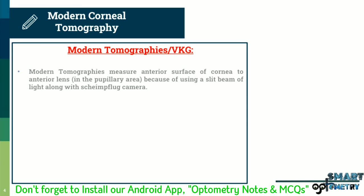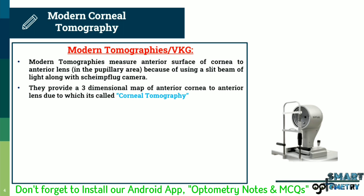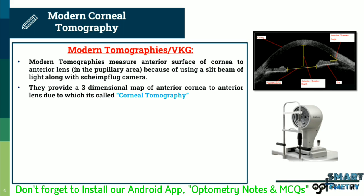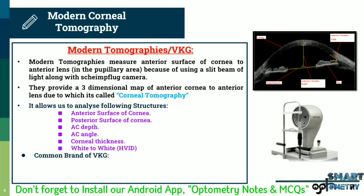Modern corneal tomographies measure from the anterior surface of the cornea to the anterior lens by using a slit beam of light along with a Scheimpflug camera. They provide a three-dimensional map, which is why it's called corneal tomography. It allows us to analyze the anterior surface of the cornea, posterior surface of the cornea, anterior chamber depth, anterior chamber angle, corneal thickness, and white-to-white distance. Common brands for tomography are PentaCAM, Sirius, and Orbscan.